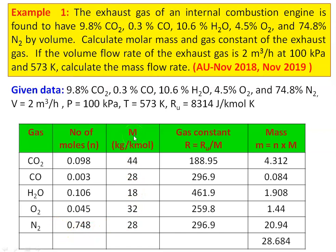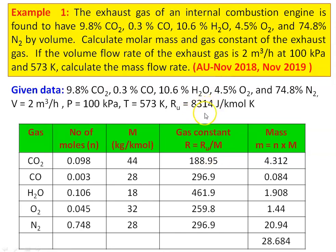The molecular weight M of each gas: CO2 = 44, CO = 28, H2O = 18, O2 = 32, N2 = 28. The gas constant R = Ru/M. So: 8314/44 = 188.95, 8314/28 = 296.9, 8314/18 = 461.9, 8314/32 = 259.8, and 8314/28 = 296.9 J/kg·K.